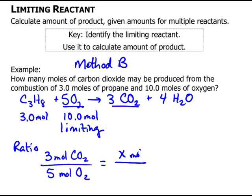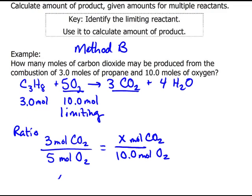When I cross-multiply and solve for X, I get that X is 6 moles of CO2 can be produced.